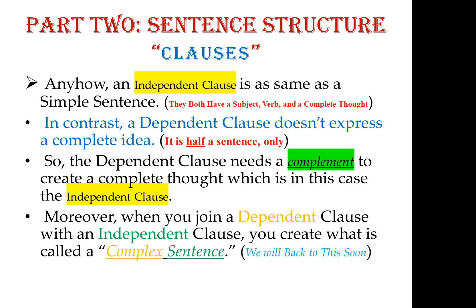When you join a dependent clause with an independent clause, you create what is called a complex sentence. Whenever there is a dependent clause, it doesn't have a complete idea, and we must join an independent clause with it to produce a complete thought. The dependent clause cannot stand alone — it is really weak and doesn't have a complete idea.